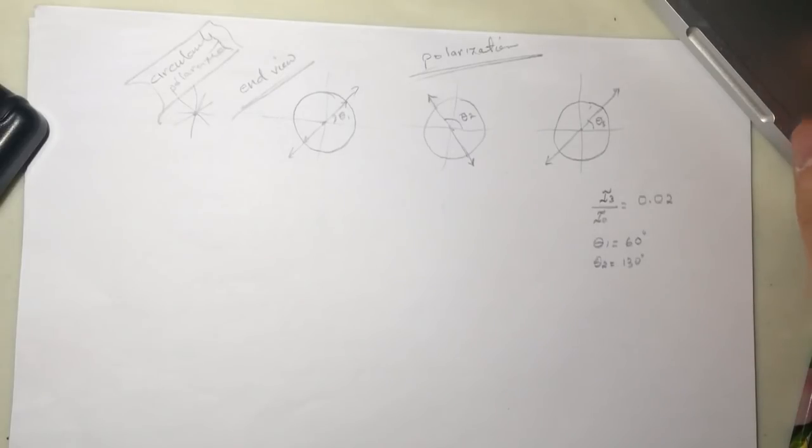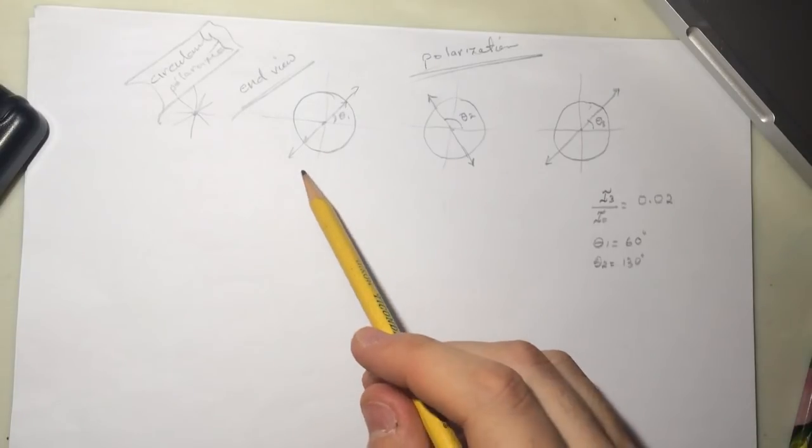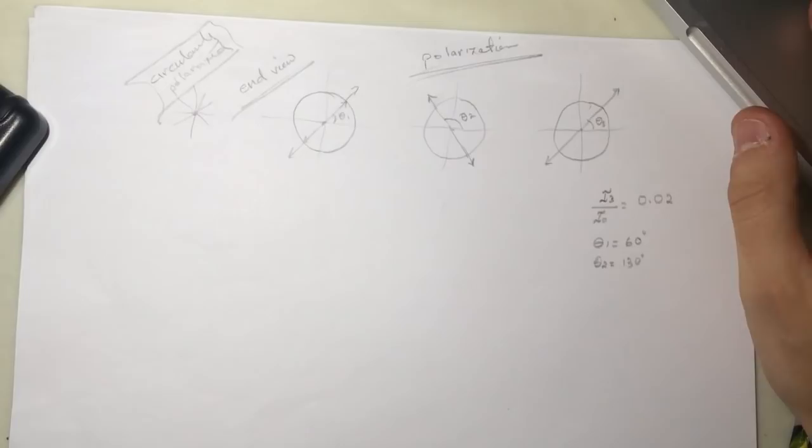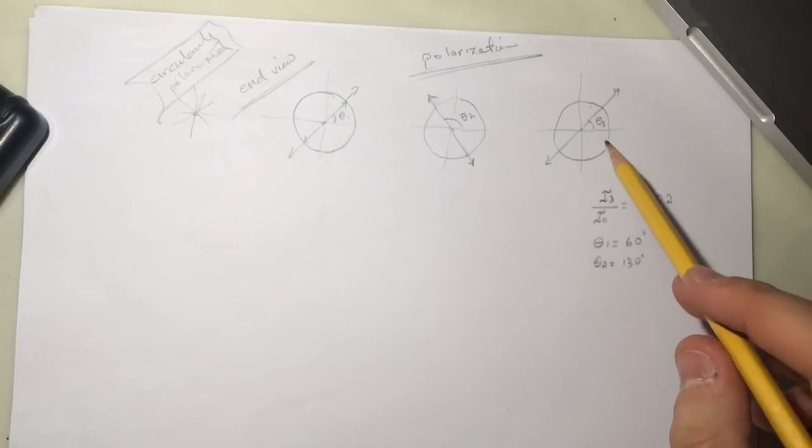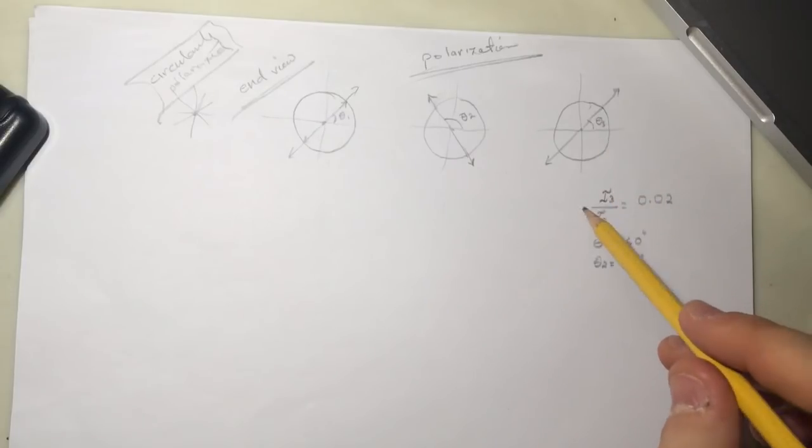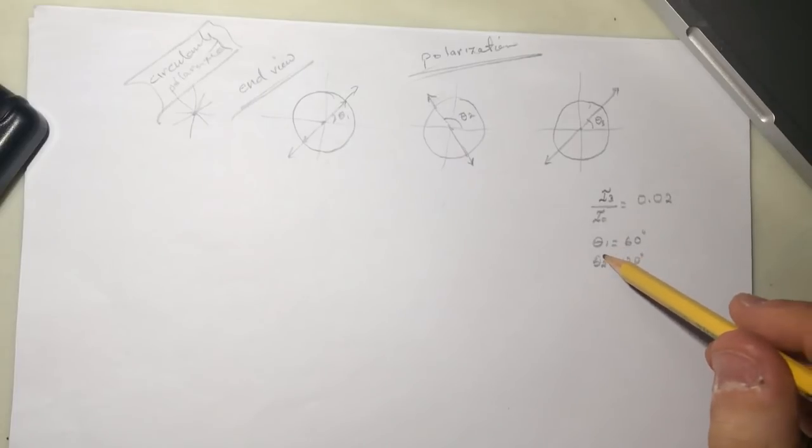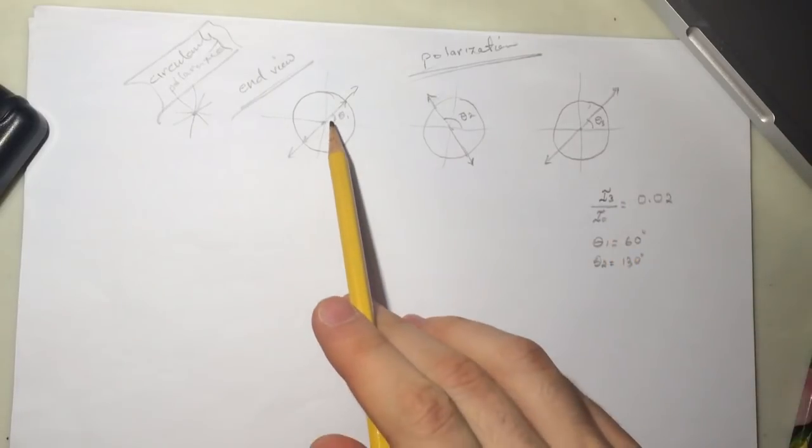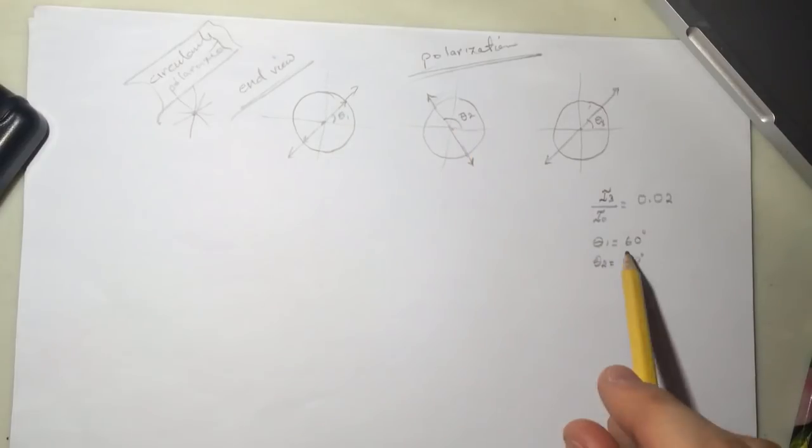Hi guys, this is Smart Physics Problem, the polarization. So we have a stack of three linear polarizers, 1, 2, 3. It gives the ratio of the intensity 3 over the initial intensity is equal to this. They gave us the initial, not the initial, the first angle and the second angle.